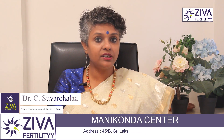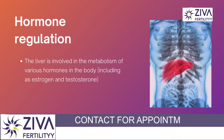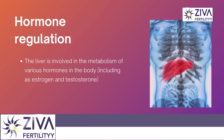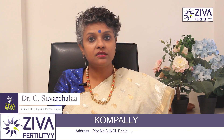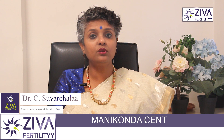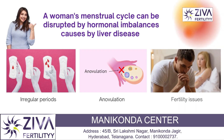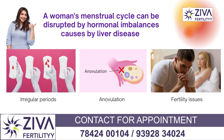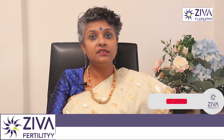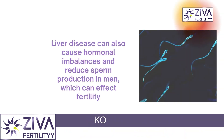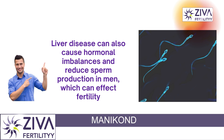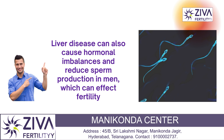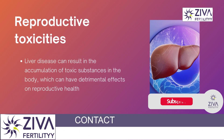The first key point is hormone regulation. The liver is involved in the metabolism of various hormones in the body, including sex hormones such as estrogen and testosterone. Hormonal imbalances resulting from liver disease can disrupt the normal reproductive hormonal balance and menstrual cycle in women, leading to irregular periods, anovulation, and fertility issues. In men, liver disease can also disrupt testosterone metabolism, leading to hormone imbalances and reduced sperm production.